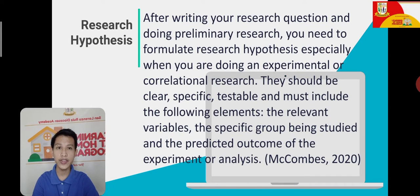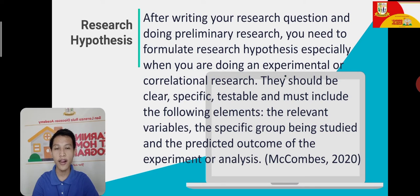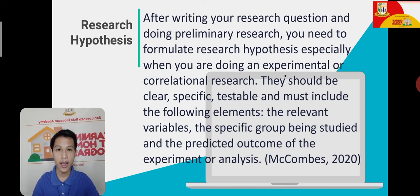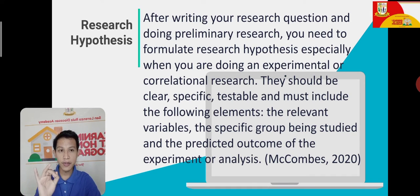After writing your research question and doing preliminary research, you need to formulate the research hypothesis, especially when you are doing experimental or correlational research. The hypothesis should be clear, specific, testable, and must include the following elements: the variables, the specific group, and the outcome prediction of your study.